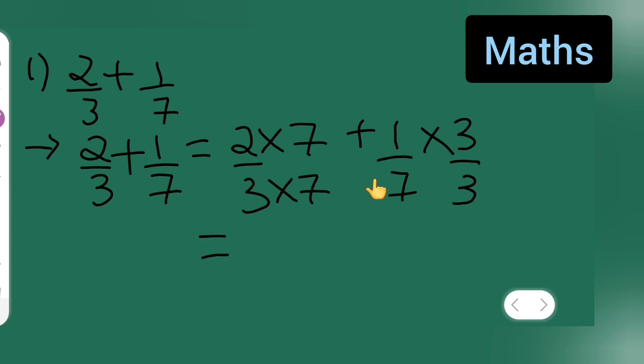21, right? So 2 sevens are 14 upon 3 sevens are 21, plus 3 ones are 3 upon 21. So 14 plus 3 will be...